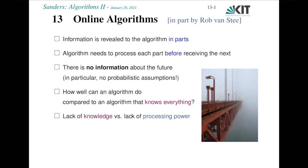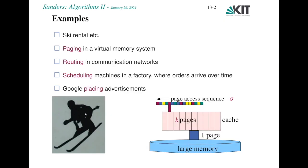In online algorithms, one approach is to compare the algorithm with an algorithm that knows everything. We have an analogy here to approximation algorithms — in approximation algorithms we are comparing to an algorithm with a lot of processing power; now we are comparing to an algorithm with a lot of knowledge about the future. And we get a similar formalism with competitive ratios rather than approximation ratios.